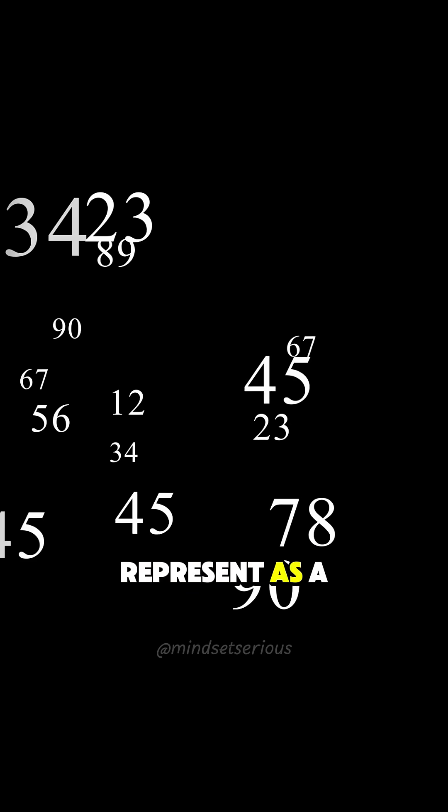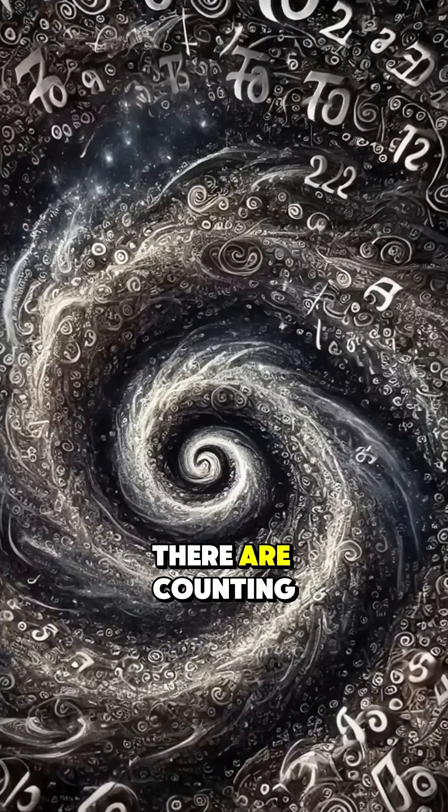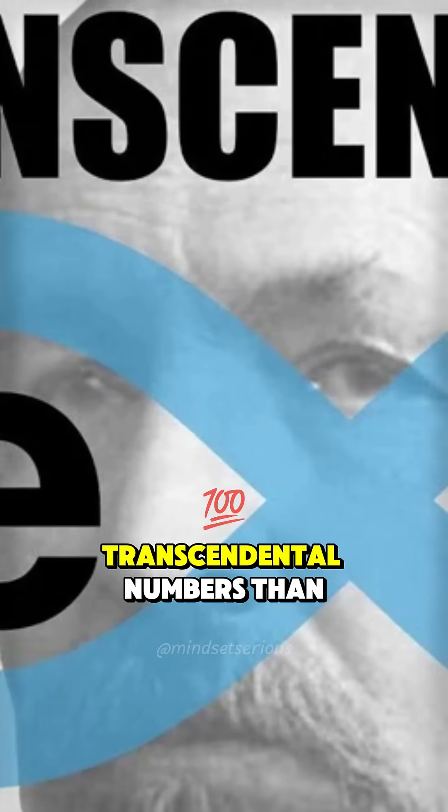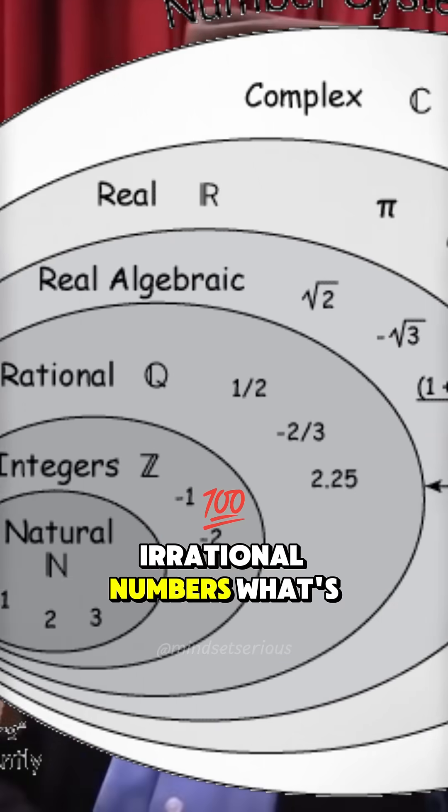The number of irrational numbers, so the numbers that you cannot represent as a fraction, there are more of those than there are counting numbers by far. So these are orders of infinity. Then there are more transcendental numbers than there are irrational numbers.